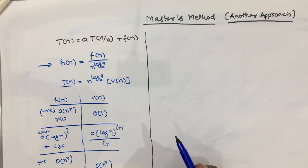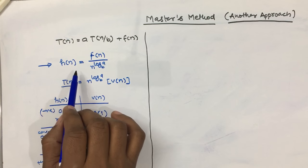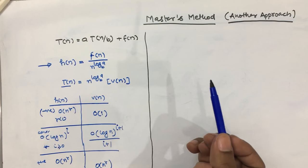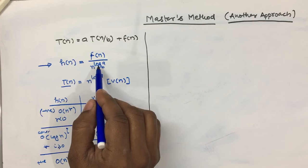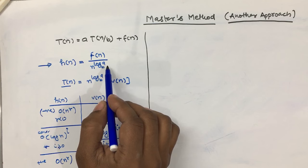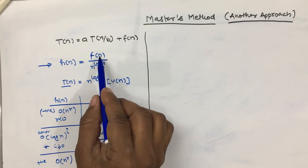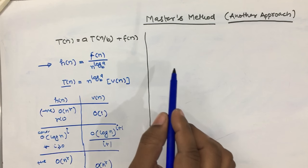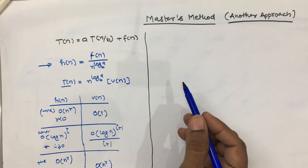To calculate h, it is a ratio involving the factor n to the power log-a-base-b used in the standard Master Method. We calculate the ratio of f(n) to this factor — this is essentially a comparison between n^(log_a b) and the value of f(n), which is also done in the standard Master Method.